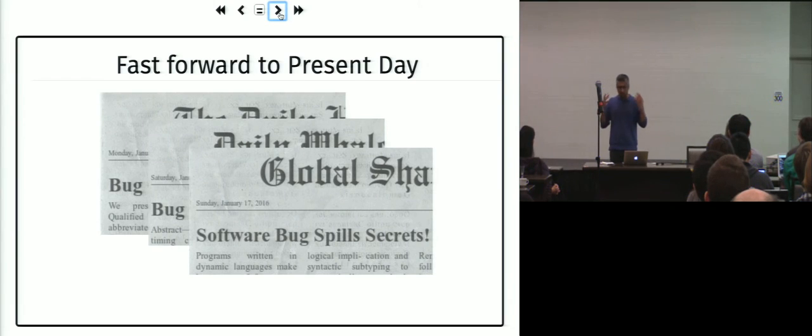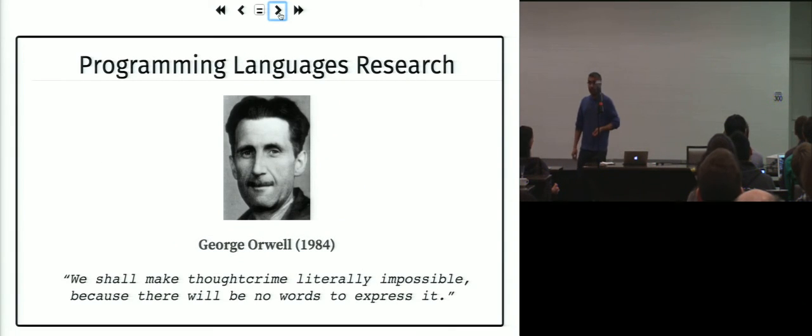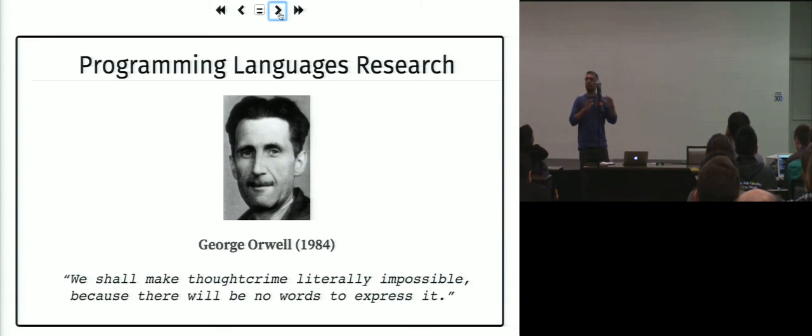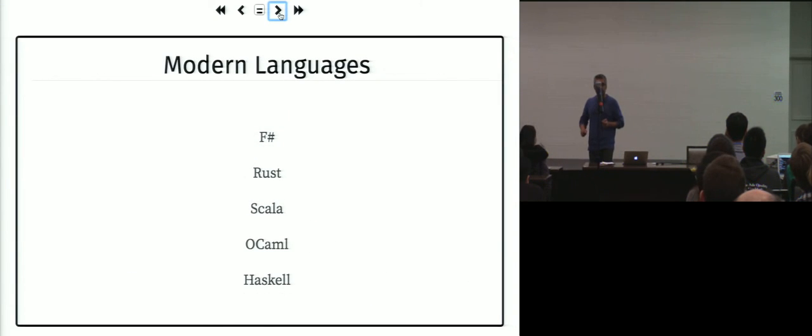This brings me to the question: what do programming languages people do? When I go to a party and meet other parents, this is my current answer. This is George Orwell, who wrote 1984. One of the great lines: we will make thought crime literally impossible because there will be no words to express it. Replace thought crime with bugs or badness or slowness. This to me is what programming languages research is about.